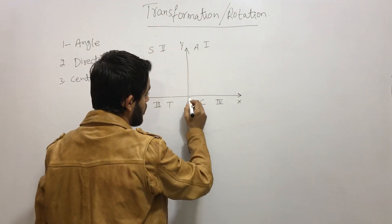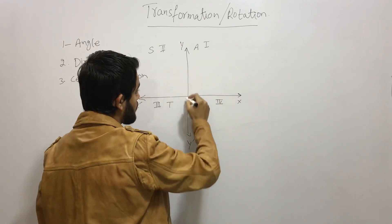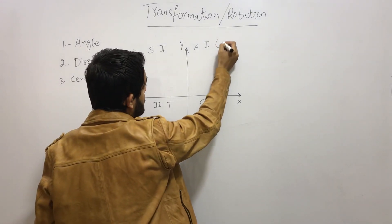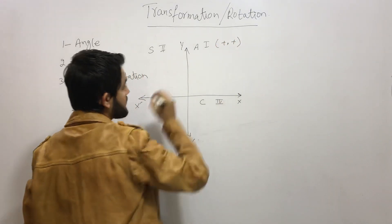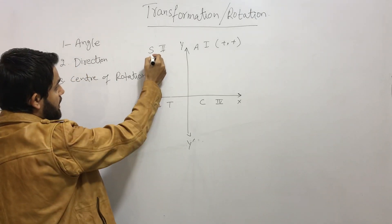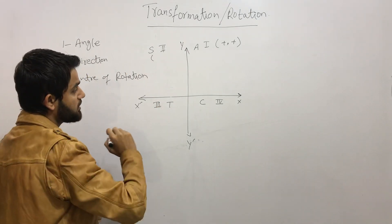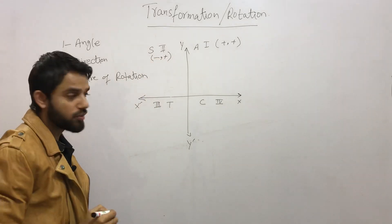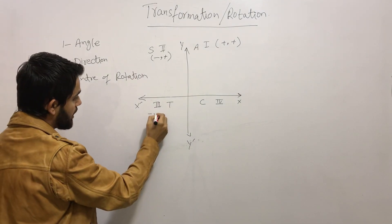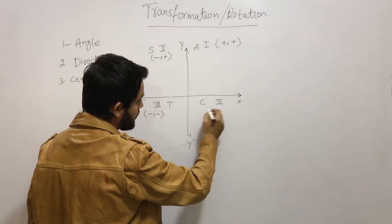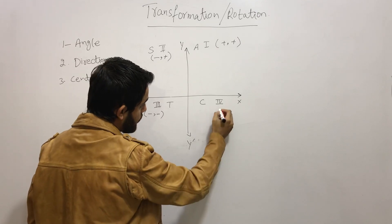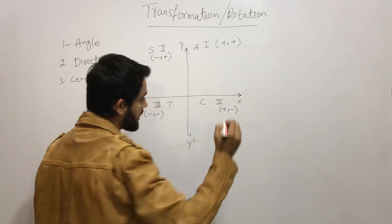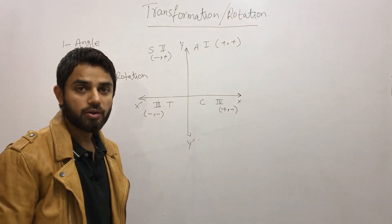On the X-axis we always take cos theta, and on the Y-axis we always take sin theta. So when all are positive, both X and Y are positive. In the second quadrant, X is negative and Y is positive. In the third, both are negative. In the fourth, X is positive and Y is negative.